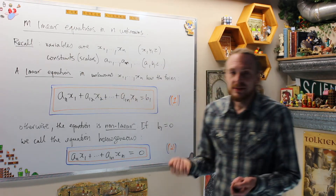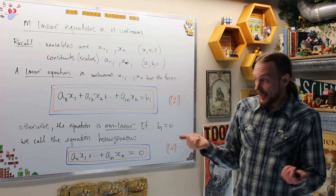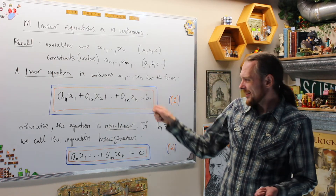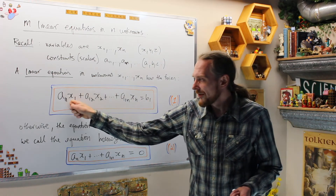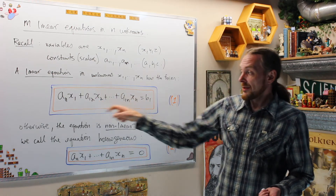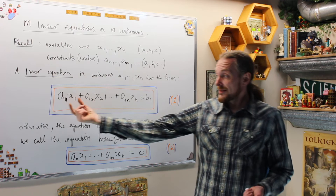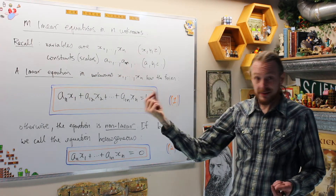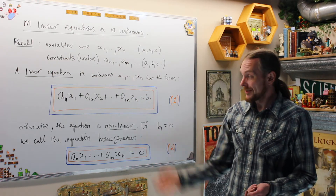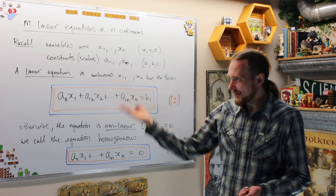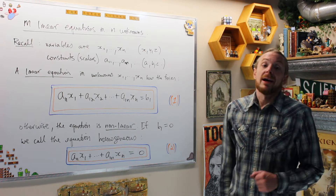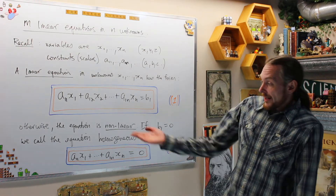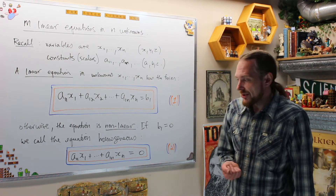A linear equation in N unknowns is an equation where every term is a constant or a multiple of a single variable. A multiple of a single variable is just a real number — a scalar — multiplied by one of the unknowns. This is the general form of a linear equation in N unknowns. Otherwise, the equation is called nonlinear.